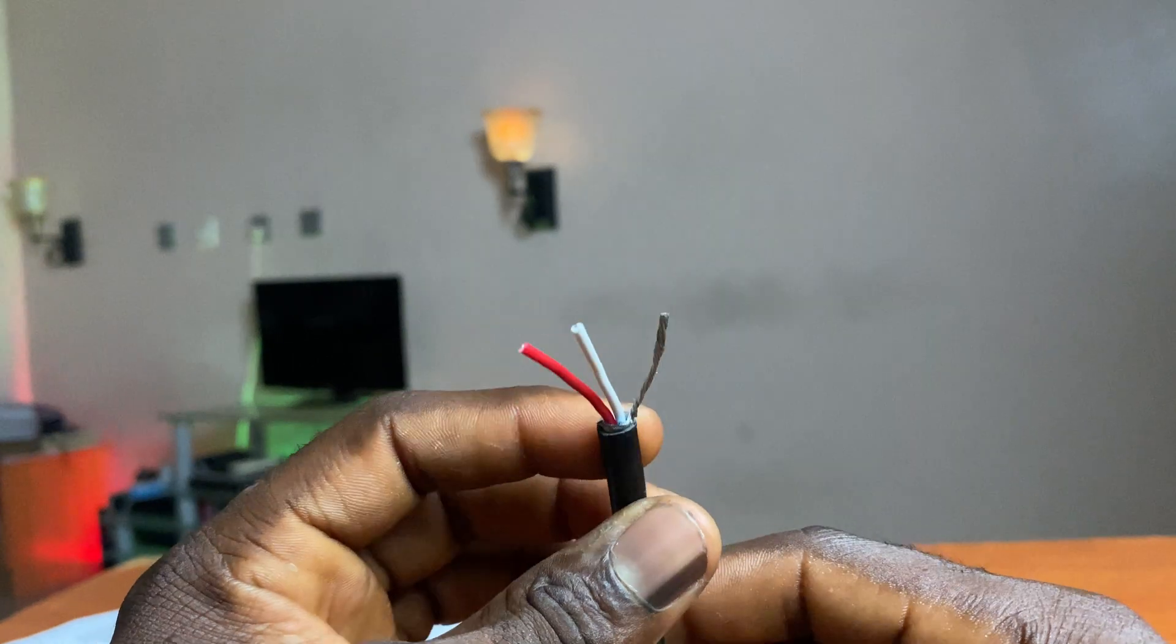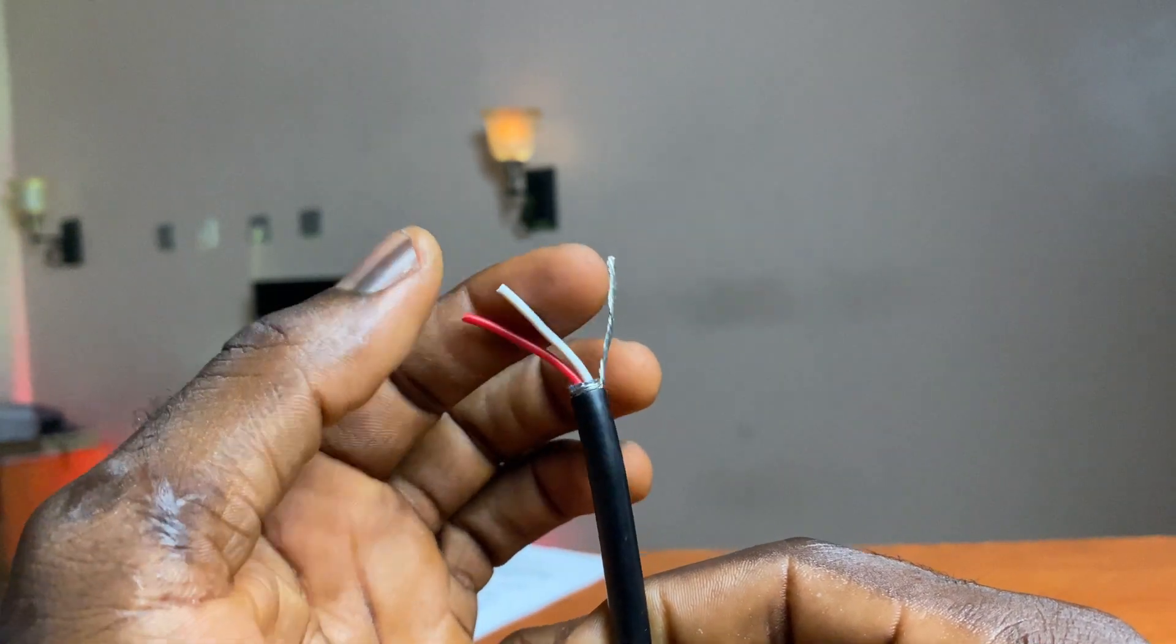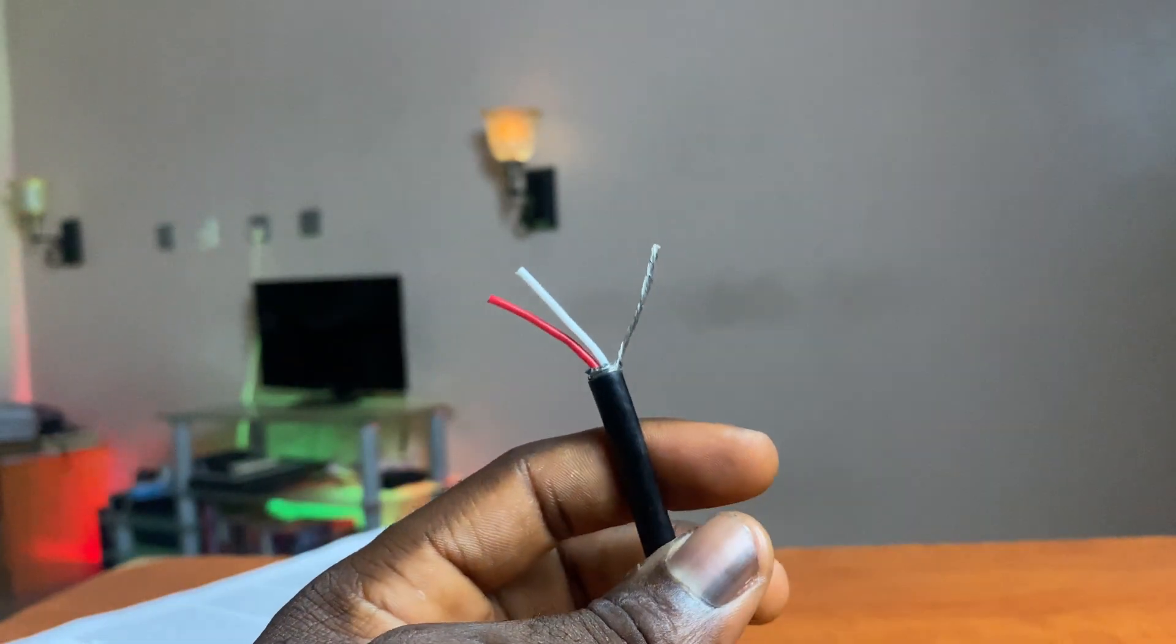A balanced audio connection involves using two conductors—a positive and a negative—and then there's a shield which connects to ground. The shield doesn't carry any signal at all and it's irrelevant in the cable's ability to form a balanced connection.